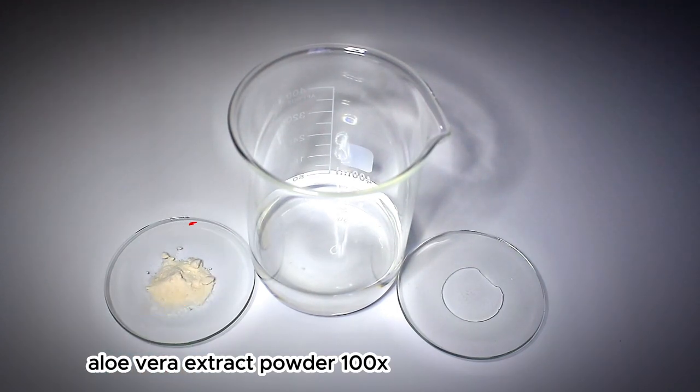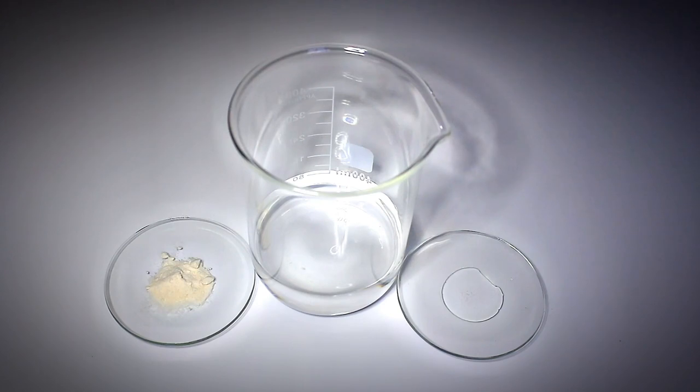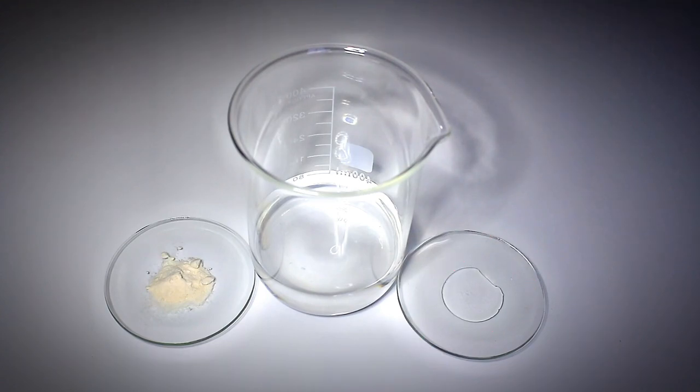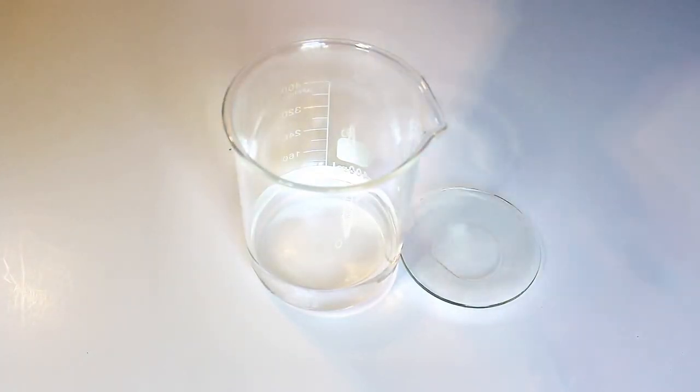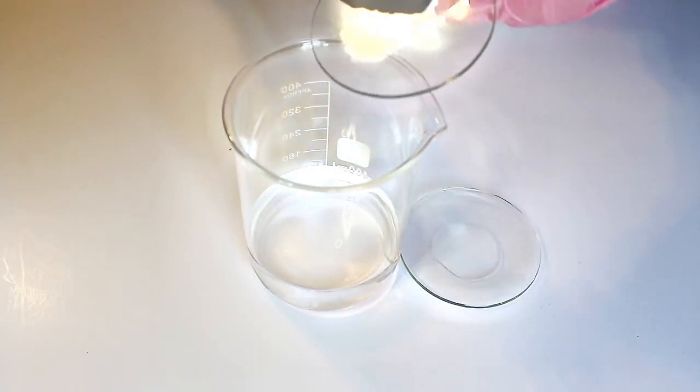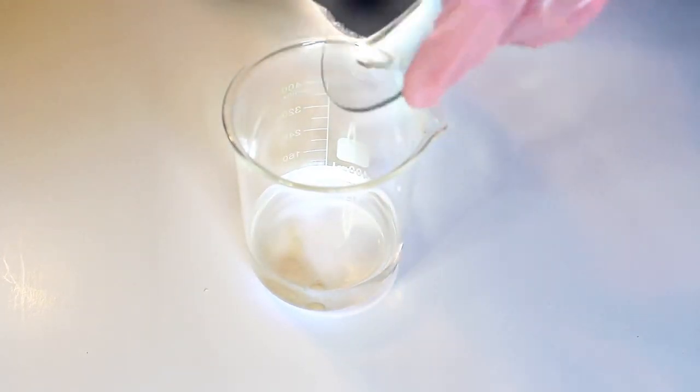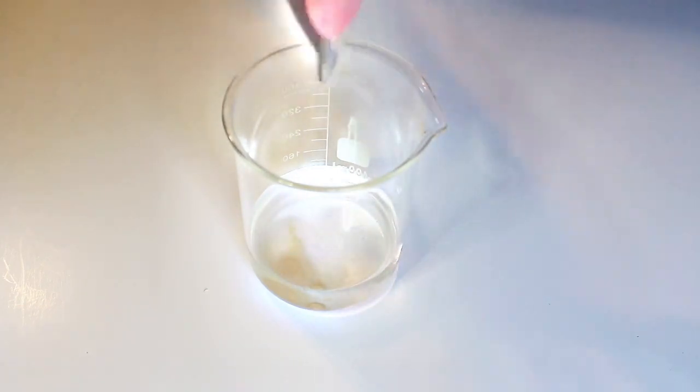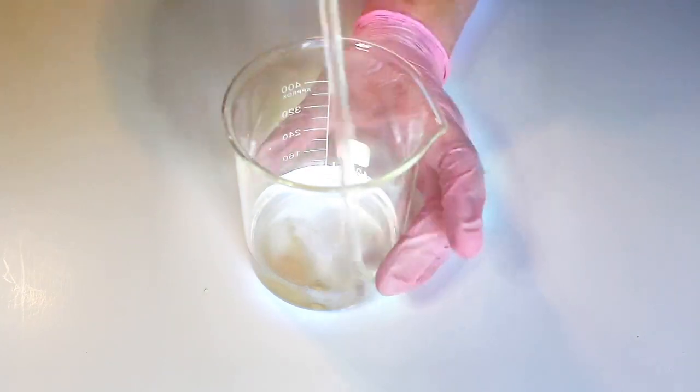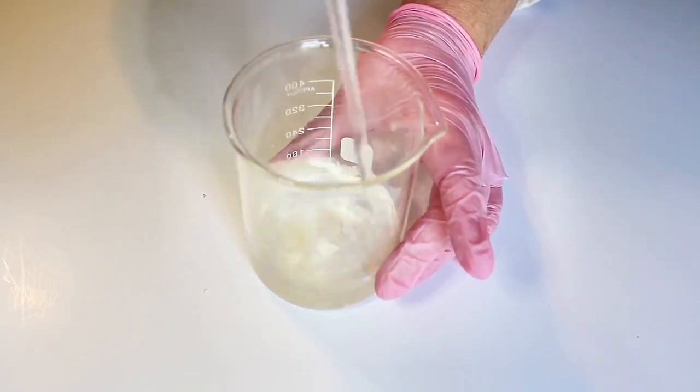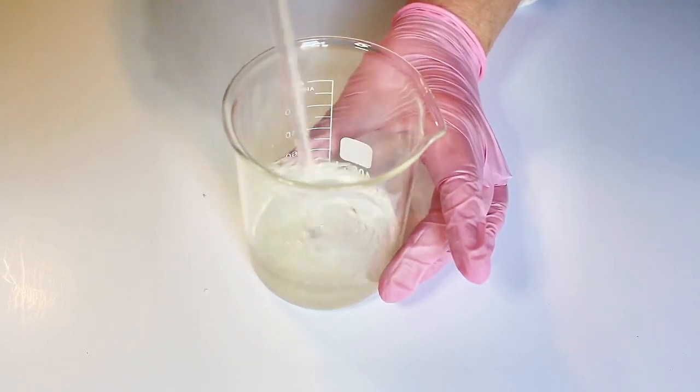We'll need one gram aloe vera extract powder 100 times, 98.5 grams distilled water, 0.5 grams liquid germol plus. I begin by having all my ingredients already weighed out and measured. I put the one gram of aloe vera in the distilled water. Then I put the 0.5 grams of liquid germol plus. And with those ingredients, then I use a glass rod to stir everything up, kind of break chunks up in it just a little bit.